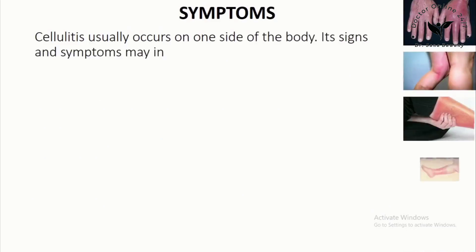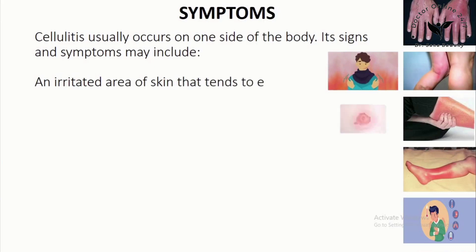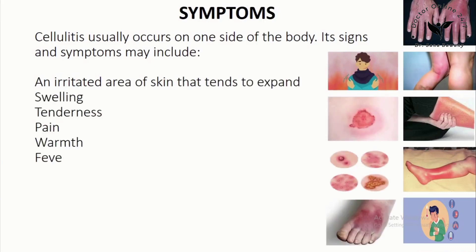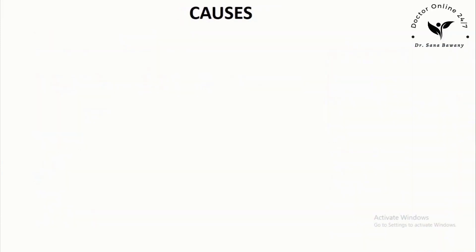Symptoms: Cellulitis usually occurs on one side of the body. Its signs and symptoms may include: an irritated area of skin that tends to expand, swelling, tenderness, pain, warmth, fever, chills, spots, blisters, and skin dimpling.